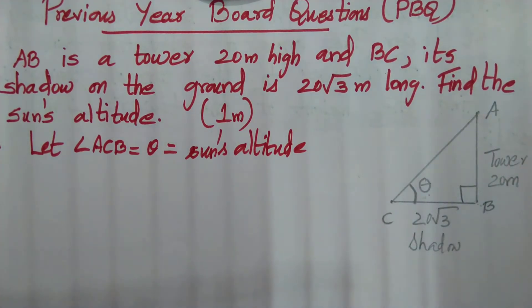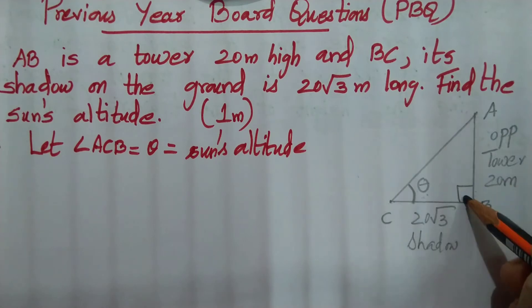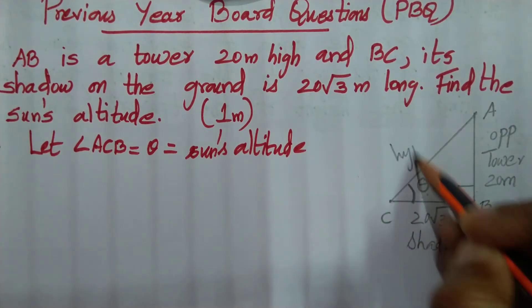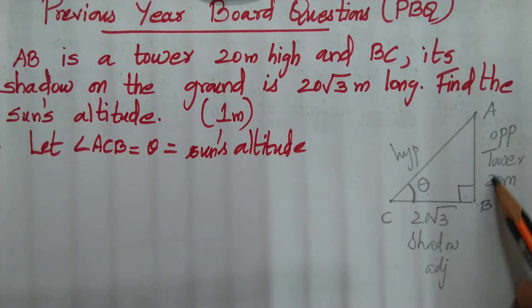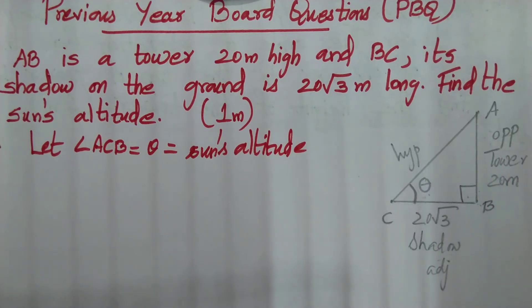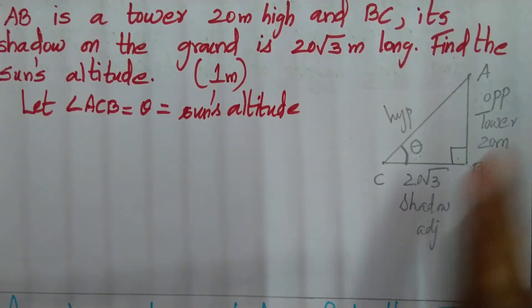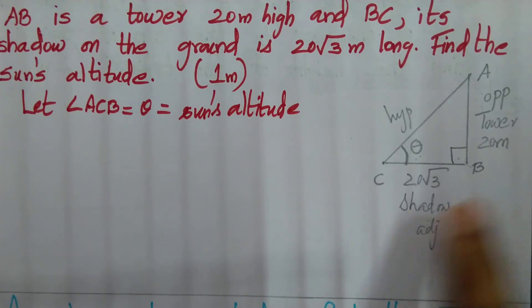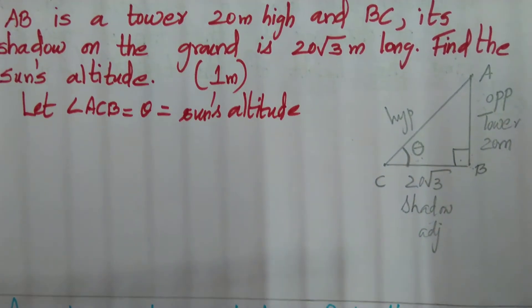The theta is the opposite side and 90 degrees is on the opposite side. What is this? The adjacent side. They have given two values which are the opposite side and the adjacent side.